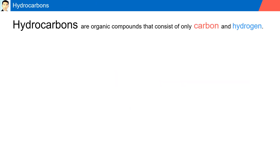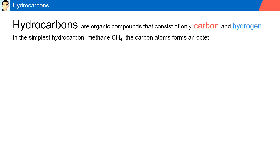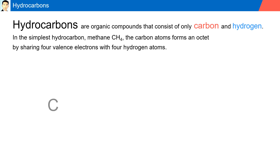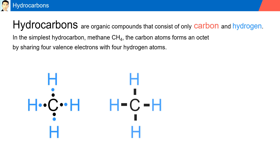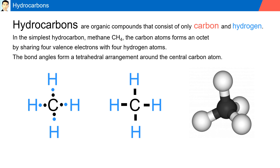Hydrocarbons are organic compounds that consist of only carbon and hydrogen. In the simplest hydrocarbon, methane (CH4), the carbon atom forms an octet by sharing four valence electrons with four hydrogen atoms. The bond angles form a tetrahedral arrangement around the central carbon. In organic chemistry, every carbon has four bonds.